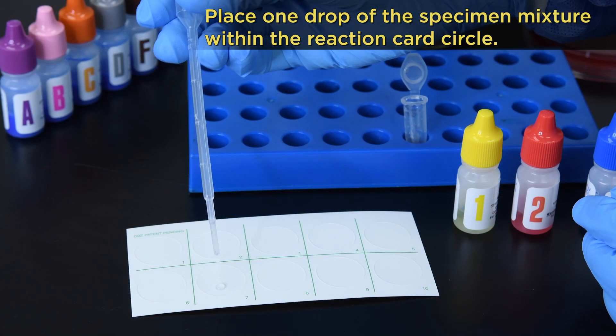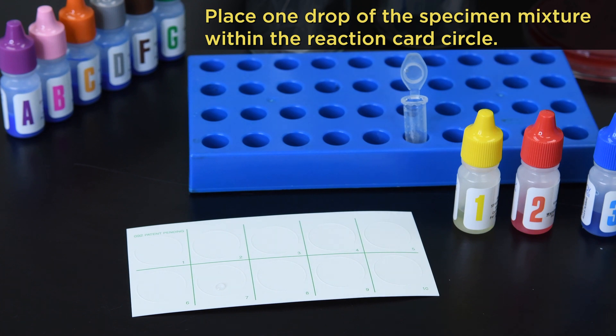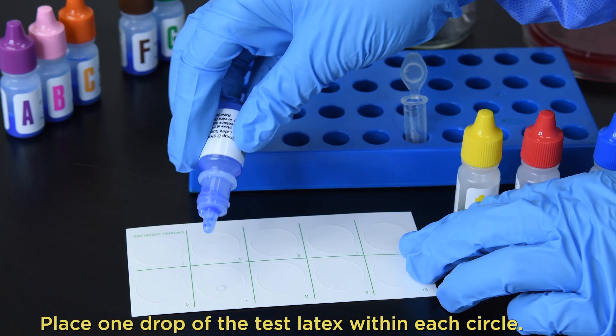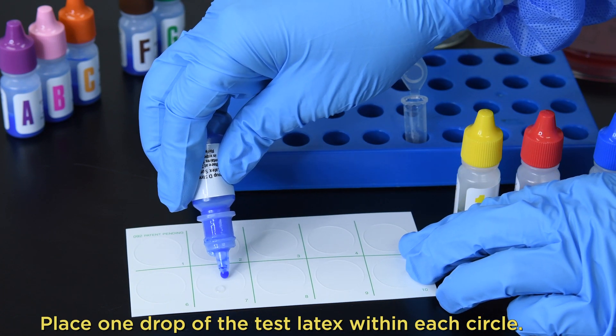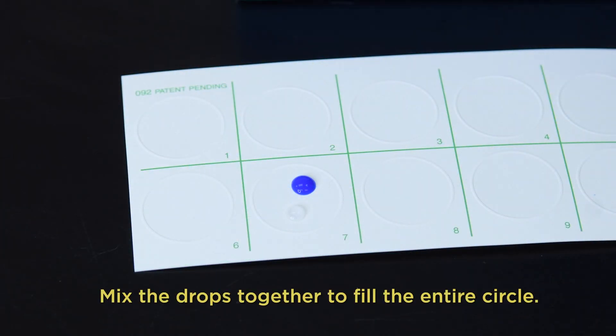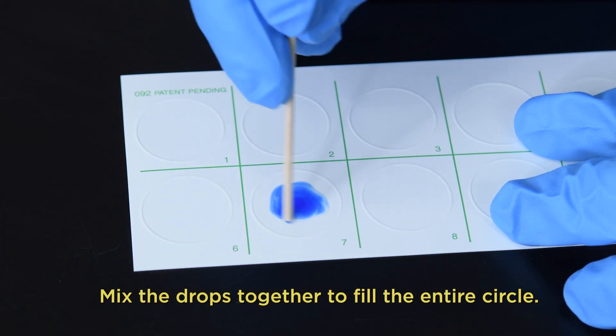Place one drop of the specimen mixture within the reaction card circle. Now place one drop of the test latex within each circle. Mix the drops together to fill the entire circle.